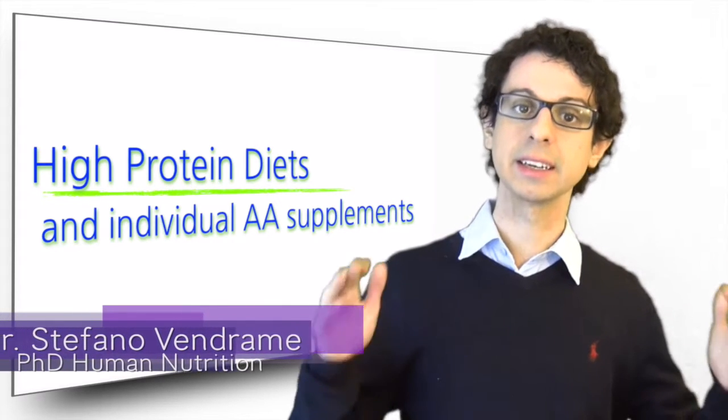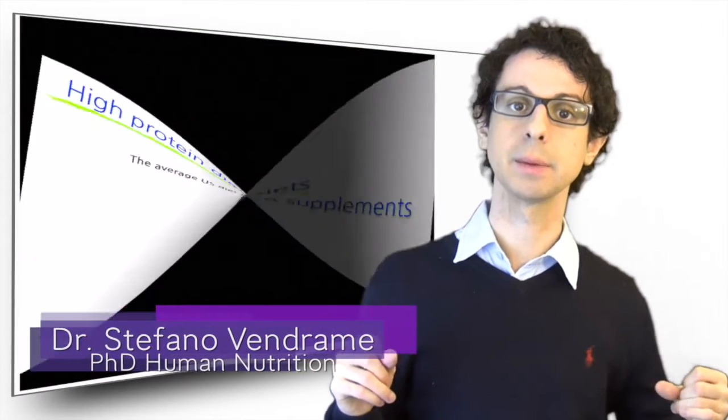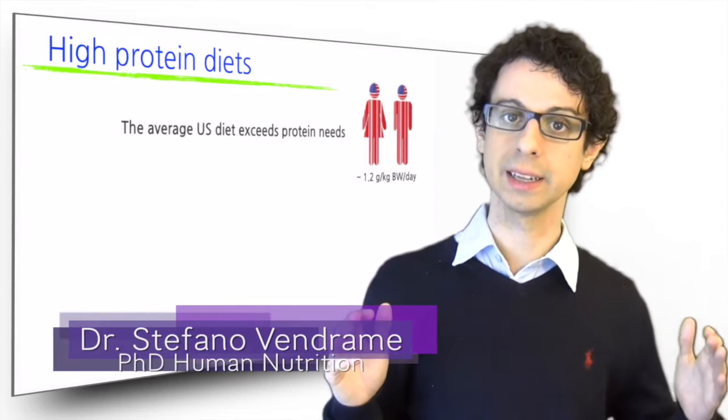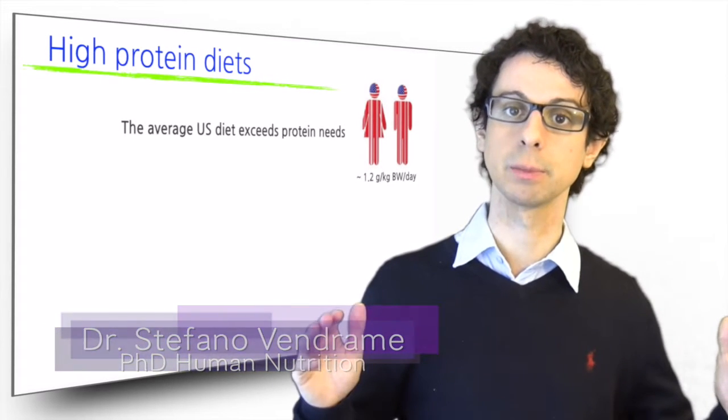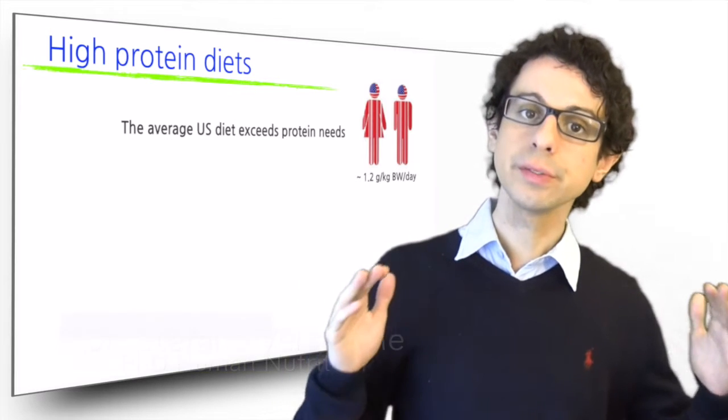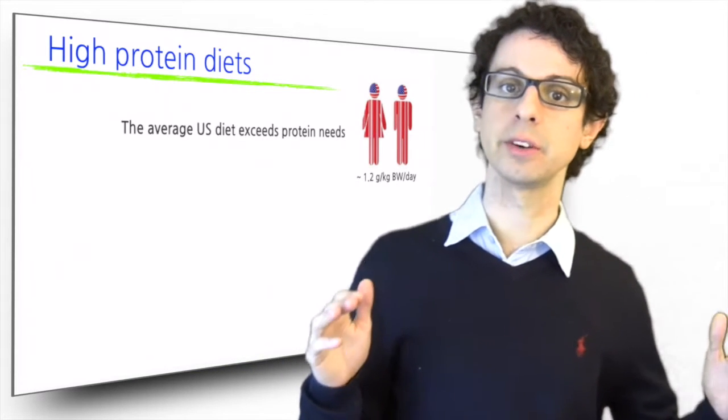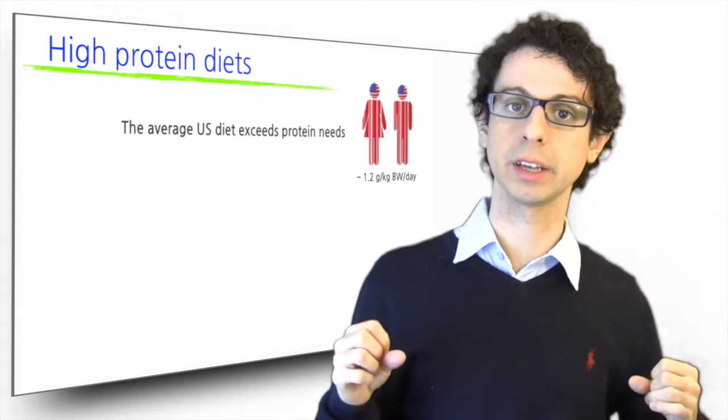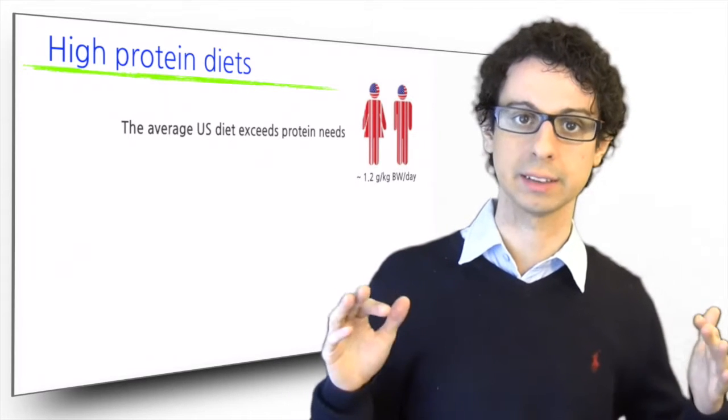The average US diet exceeds protein requirements and provides about 1.2 daily grams of proteins per kilogram of body weight. When we refer to high protein diets, however, we do not refer to the slightly higher protein intake that all of us more or less have.